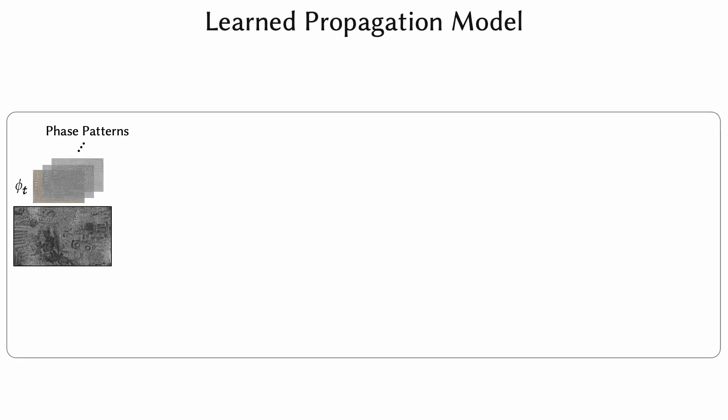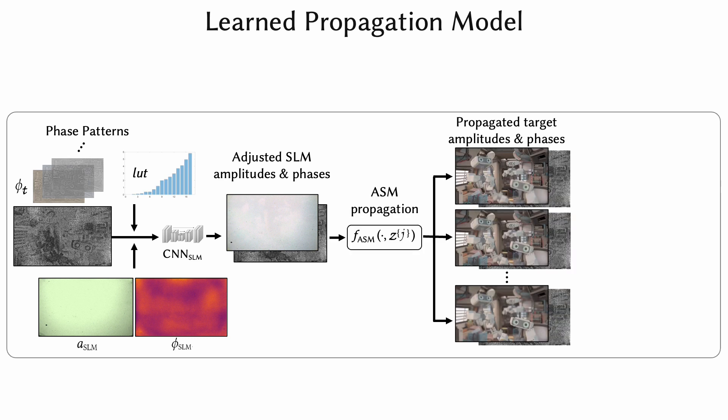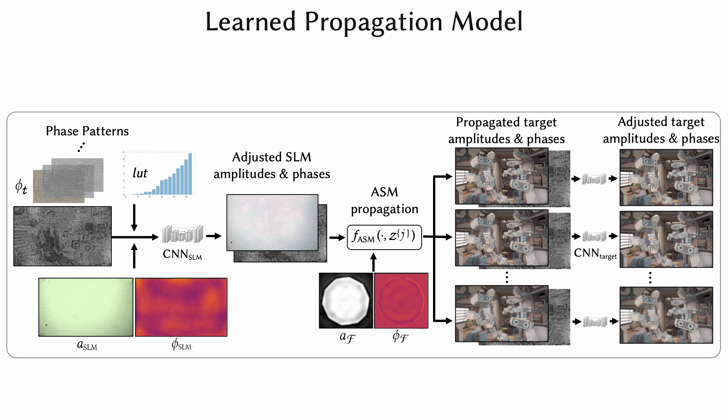At the start of our propagation model, each inputted phase pattern is quantized with a learned lookup table. Next, a learned amplitude and phase modulation that can compactly characterize imperfect incident illumination is applied. This wavefront is then passed through a CNN that models aberrations at the SLM plane. The resulting wavefront is propagated with ideal ASM propagation to the target planes, during which an amplitude and phase modulation is applied in the Fourier plane. This can efficiently model optical filtering and minor deviations in propagation distances. Finally, a CNN at the target planes adds additional aberrations.